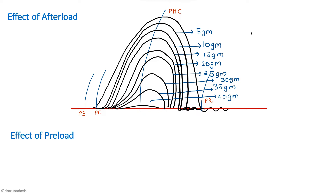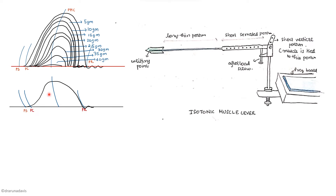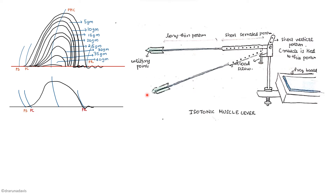We then release the afterload screw to convert to the preload setup and stimulate again. At that time we can see the muscle is now able to lift 40 grams in the preload setup. You can mark the point of stimulation, contraction, maximum contraction, and relaxation. There is a slight slant in this graph because when we release the afterload screw, the position of the isotonic lever changes, causing all preload curves to have a slant.